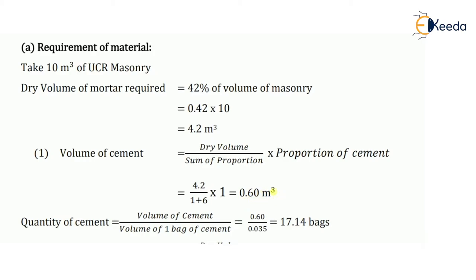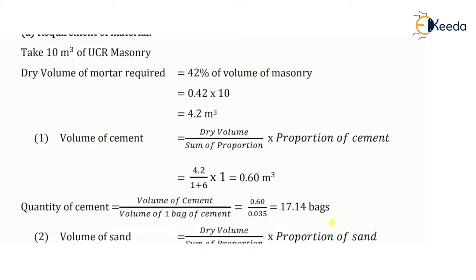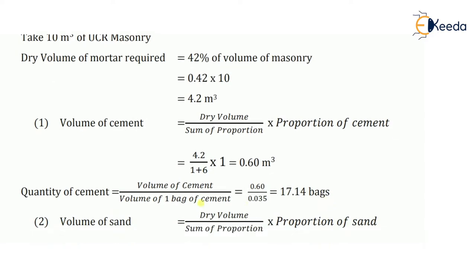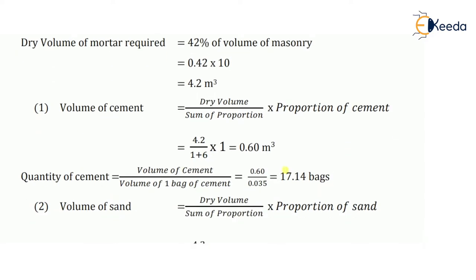Now let's convert this meter cube of cement into number of bags. I will be dividing the volume of cement by the volume of one bag of cement. Remember, the volume of one 50 kg bag of cement is 0.035 meter cube. So 0.60 meter cube divided by 0.035 comes as 17.14 bags. So the number of cement bags required for UCR masonry of 10 meter cube with proportion 1:6 is 17.14 bags.